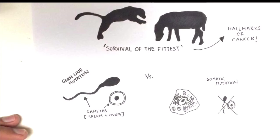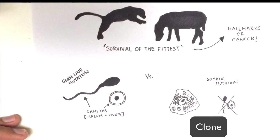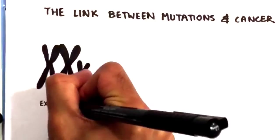This somatic mutation will be passed on to the descendant cells of the mutant cell. When the mutant cell undergoes cell division, it will form daughter cells, and those daughter cells will carry this somatic mutation as well. After many, many cell divisions, there will be thousands or millions of direct descendants of this single mutant cell. Together, we call all these cells a cell clone, because every cell can trace its ancestry directly back to that single mutant cell.